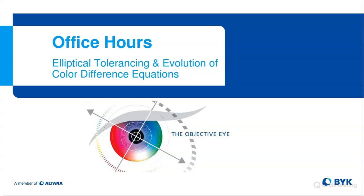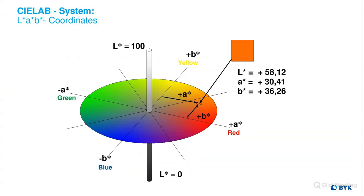Hello, thank you for everybody joining today. As John mentioned, we will be going over elliptical tolerancing and the evolution of color difference equations. If you're unfamiliar, difference equations are essentially how you get the delta E value, or your total color difference value when doing color measurement. Starting off, if you're unfamiliar with the LAB coordinates, this is basically what all of the color difference equations are based off. The LAB values are essentially coordinates that describe where you are in color space — a three-dimensional sphere in which all colors exist. Using your LAB coordinates, you can identify exactly where you are within color space.